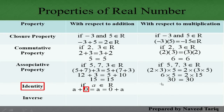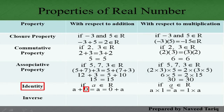Multiplicative Identity: اگر ہم 'a' کو 1 کے ساتھ multiply کریں تو answer پھر بھی 'a' آئے گا — a×1 = a۔ کسی بھی real number کو 1 سے multiply کرنے سے کوئی فرق نہیں پڑتا۔ اس لیے 1 کو Multiplicative Identity اور 0 کو Additive Identity کہتے ہیں۔